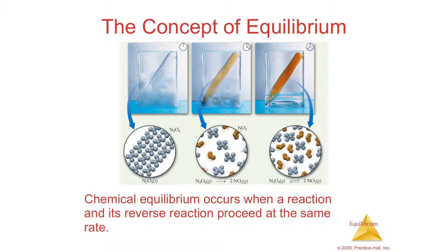Each of these are going to have a rate — a rate of going right and a rate going left. Equilibrium has the idea that you will eventually stop making new products or stop making new reactants. There's going to be a point in time at which the reactants are being made at the same rate as the products are being made. And that is equilibrium.